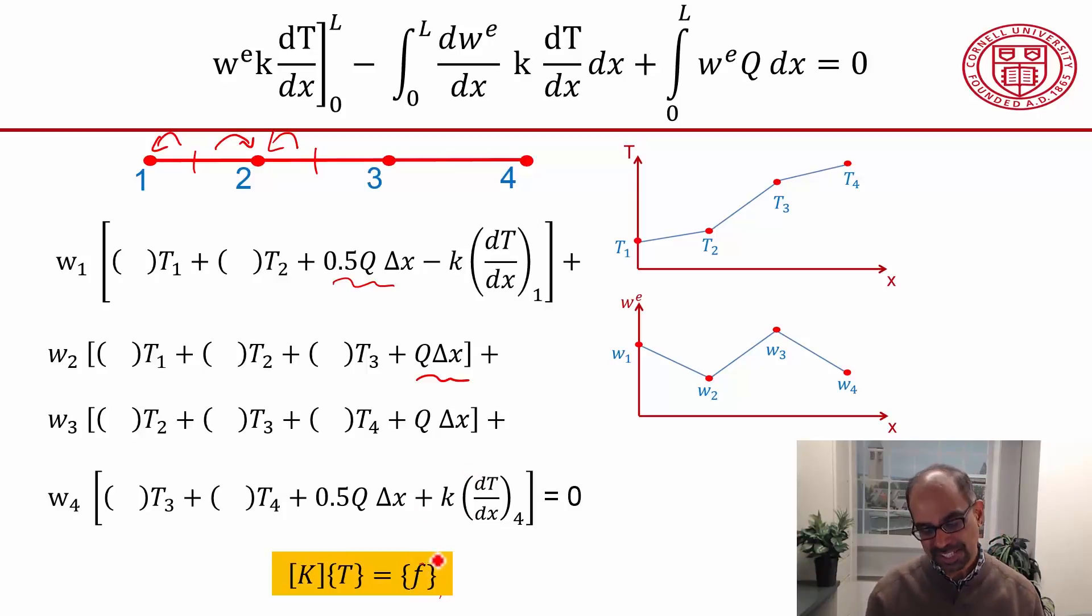But what this means is that the heat generation or the source term is going to affect all the rows of f, because it appears in all the equations. This is in contrast to this term that's going to affect only the equations at the boundaries. So that gives you some insights into how the source term gets incorporated into the algebraic equations.